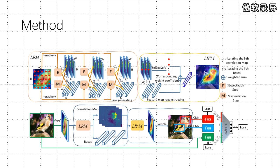Now let's move on to the proposed method section. The framework of the proposed discriminative feature-oriented Gaussian mixture model: our method first produces discriminative bases and linear weight correlation coefficient maps by the low-rank representation mechanism. Then the low-rank representation reorganization mechanism constructs new low-rank feature maps by linear weighted combining all low-rank discriminative bases.